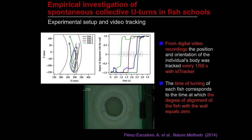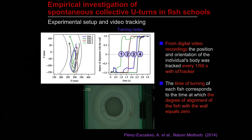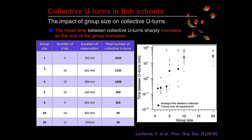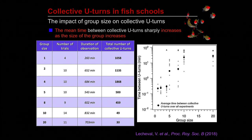On each of these events, we can identify the time of turning of each individual — when the degree of alignment with the wall equals zero — and also the position of each individual when they make their U-turn. We have investigated how these collective U-turns arise in different group sizes, from single individuals up to 20 individuals, and for each group size we recorded a very large number of events.